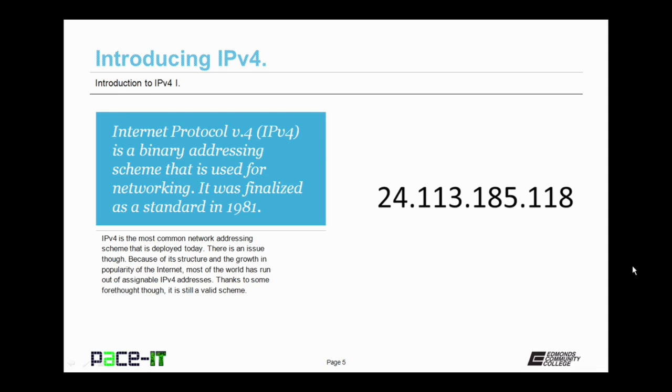Internet Protocol version 4 is a binary addressing scheme that is used for networking. It was finalized as a standard in 1981. IPv4 is the most common and popular network addressing scheme that is out there today.